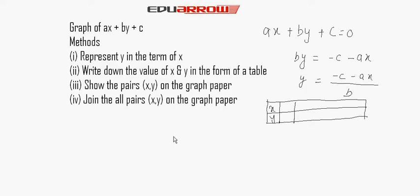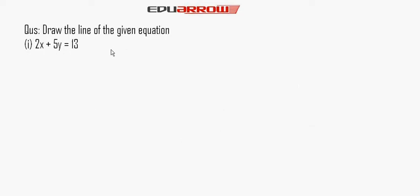Draw the line of the given equation. First, we take the equation 2x plus 5y equals 13 and solve for y: 5y equals 13 minus 2x. So y equals (13 minus 2x) over 5.